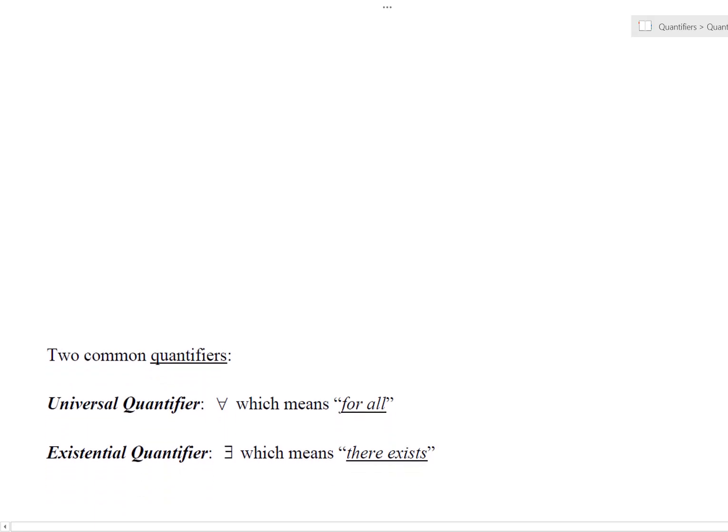Here's a couple common quantifiers. First of all, the universal quantifier, this symbol kind of looks like an upside down capital A, and that literally means the phrase 'for all'. The existential quantifier, this thing here, kind of looks like a backwards capital E. That means the phrase 'there exists'. So we're going to use these in some examples.